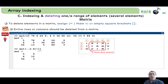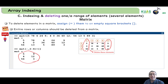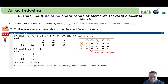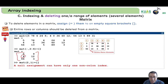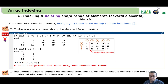For the matrix example, mat(:, 2:4) = [] deletes all rows for columns 2 through 4. The intersection of all rows and columns 2–4 is removed, leaving only columns 1 and 5. Trying to delete a single element such as mat(2,1) = [] gives an error because you must delete entire rows or entire columns in a matrix.